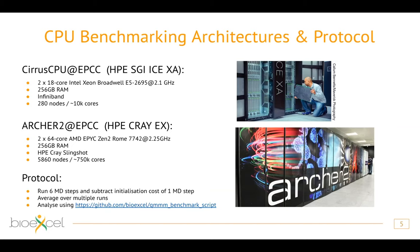We ran benchmarks on several systems chosen strategically. Cirrus, an HPC machine at APCC Edinburgh, has 280 compute nodes, each with two 18-core Intel Xeon Broadwell processors at 2.1 GHz, 256 GB RAM, and InfiniBand interconnect. ARCHER2, the UK national supercomputer, has compute nodes with two AMD EPYC Zen 2 Rome processors of 64 cores each, for 128 cores per node at 2.25 GHz, also 256 GB RAM, and HPE Cray Slingshot low-latency interconnect.